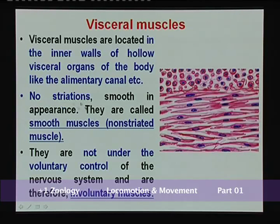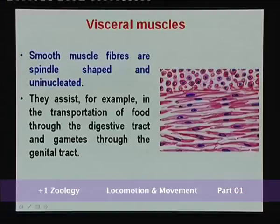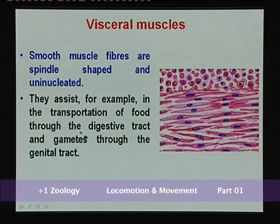Visceral muscles do not show any striations, so they are smooth in appearance — that is why they are called smooth muscles or non-striated muscles. They are not under voluntary control, so they are called involuntary muscles. Smooth muscle fibers are spindle-shaped and uninucleated. Their function is to assist in the transportation of food through the digestive tract and gametes through the genital tract.